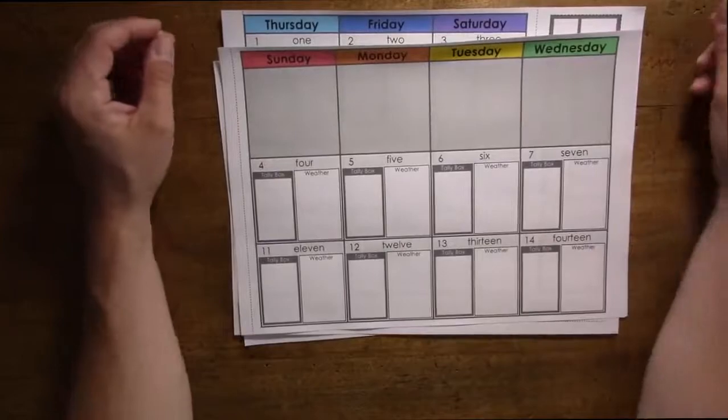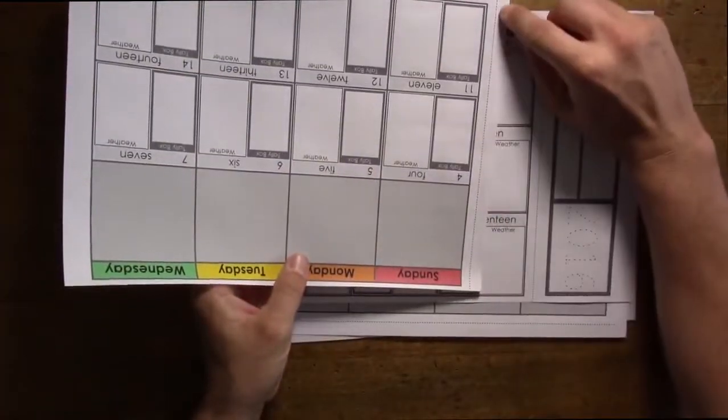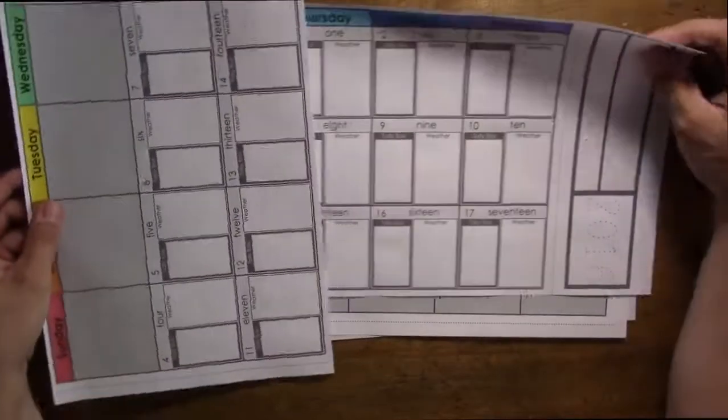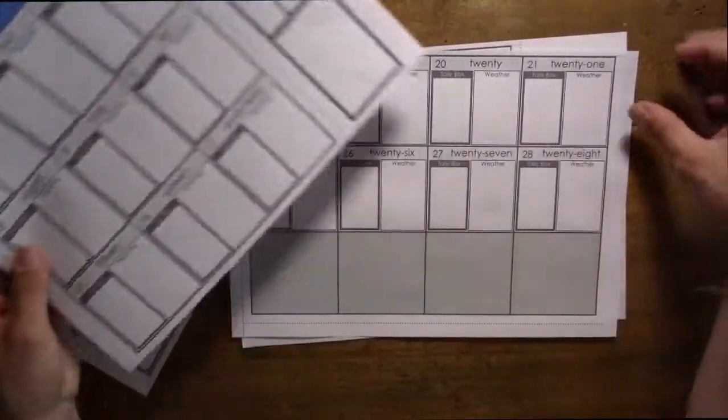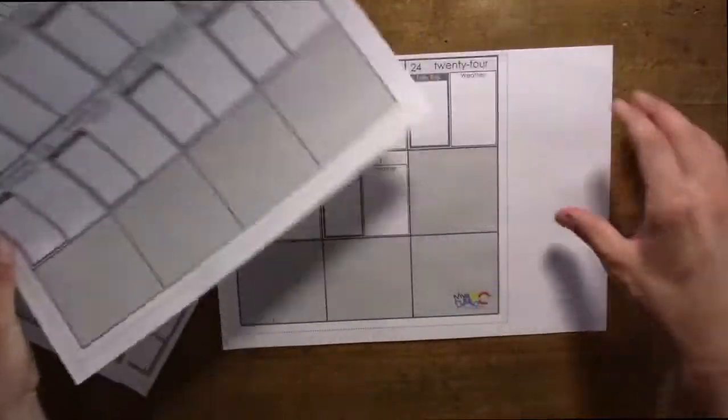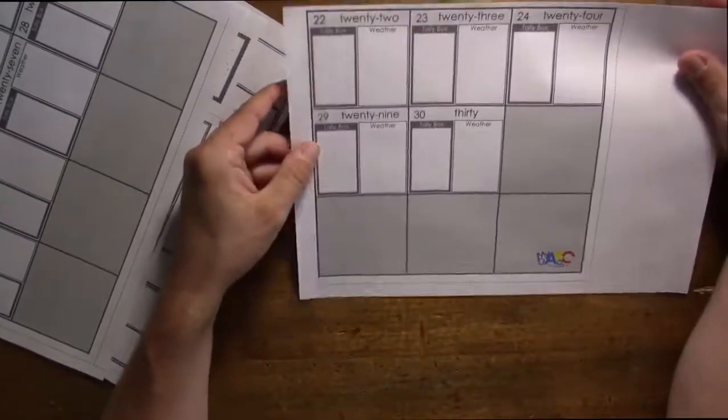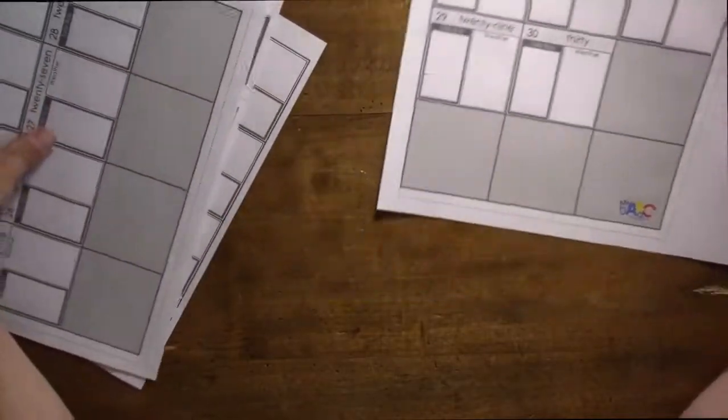And I'll demonstrate cutting out each of these sheets, and there's a dashed line, dashed lines on the various sheets where we need to cut along. And once those have been cut, then I will glue the pieces together to make the calendar.